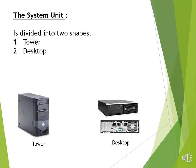There are two types of system unit. Number 1 is the tower and number 2 is the desktop. The tower is an upright rectangle and acts as a cabinet, while the desktop is a flat rectangle that sits on the desk. These are the two shapes of the system unit.